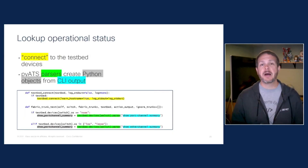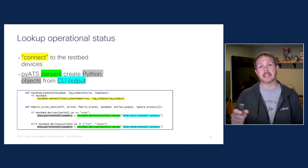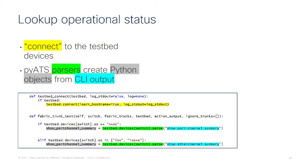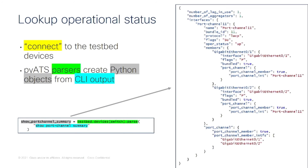With our testbed created, now we can begin to look up the operational status from our network. We start out by connecting to the devices in the testbed — PyATS gives us a very simple function to do that: testbed.connect. Then we can take each one of the show commands or the models that we want to learn, parse that out, and store it as a Python object. In our example, we can see the switch.parse command, where we send in the command and then store that as the Python object 'show port channel summary'. Here we can see what's actually stored inside of Python, with all of the details necessary to run those operational verification checks — what are the port channel members, what are their state, and so on.